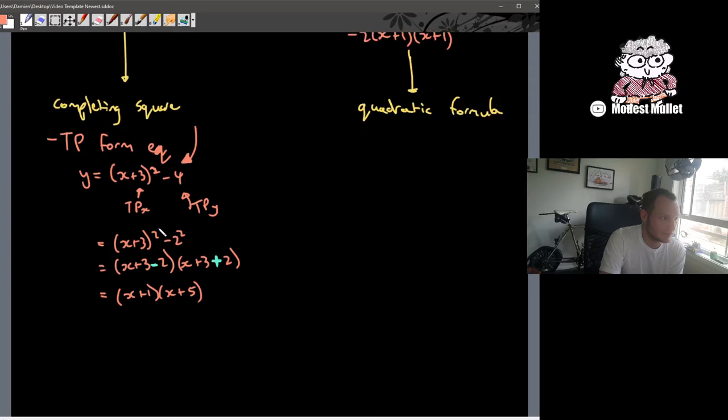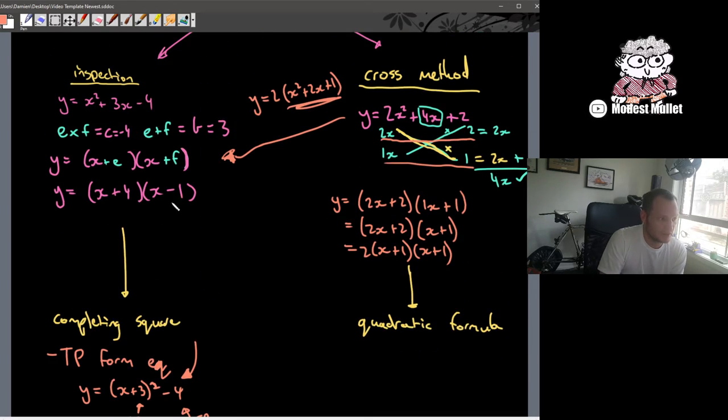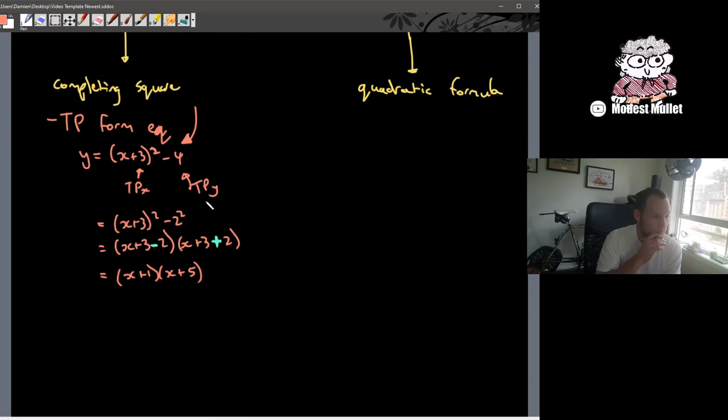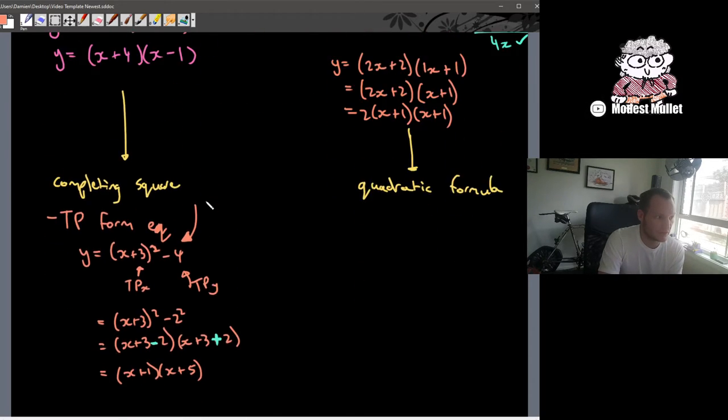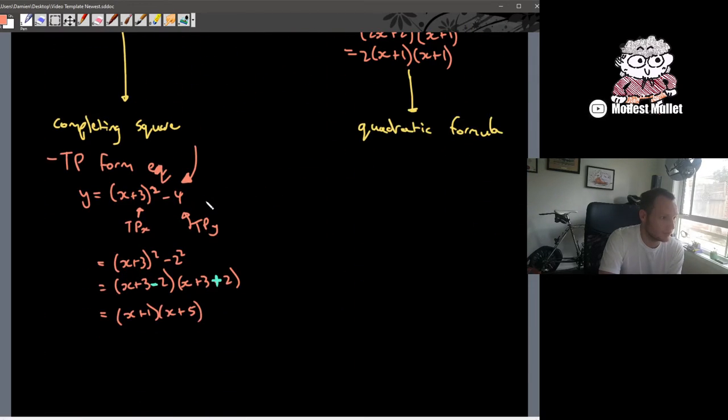That's a really handy reason for using completing the square. Or when inspection is not obvious to you, or when you end up with fractions. When you have fractions, generally you can't do it via inspection, so you have to use completing the square.